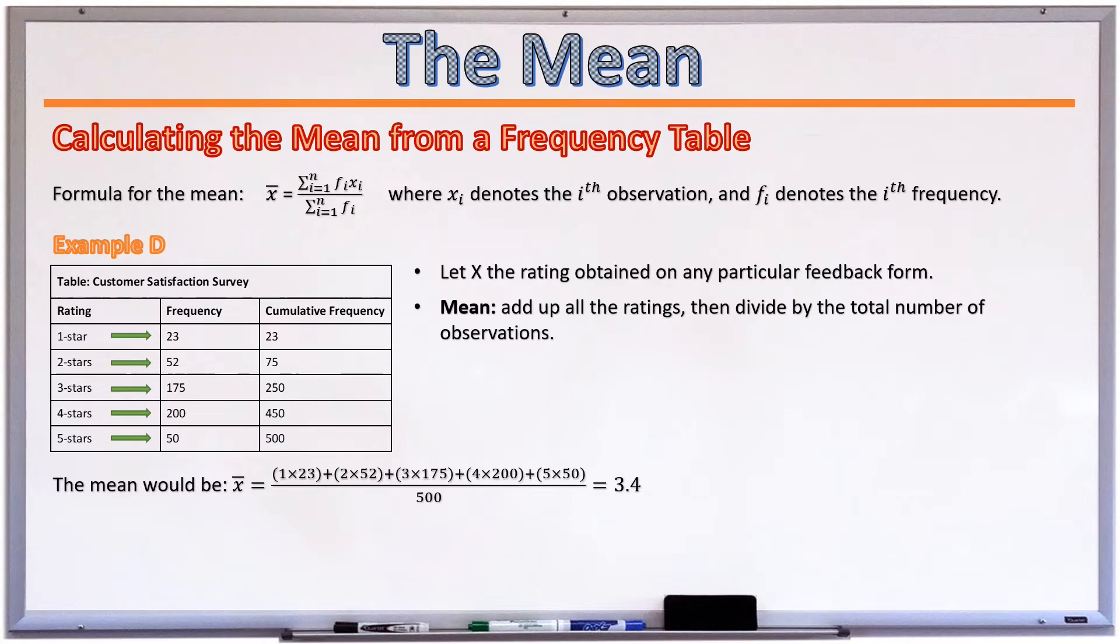And then we get x-bar, or our mean, to be 3.4 to one decimal place. What we did intuitively is exactly the same thing as calculating x-bar is equal to the sum of all the fi's, the individual frequencies, multiplied by their observations. So you take the observation, one star, and you multiply it with its frequency. We had 23 one-star observations. And then you divide all of that by the sum of all the frequencies. And the sum of all the frequencies is just the total number of observations in your data set.